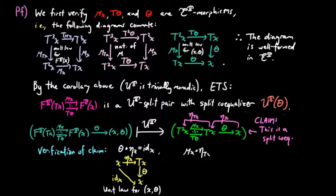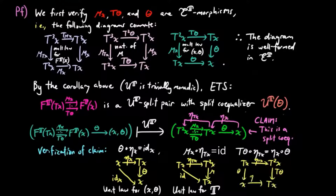We have eta X as a section of theta by the unit law for the Eilenberg-Moore object X theta. We also have eta TX as a section of mu X by one of the unit laws for the monad T.